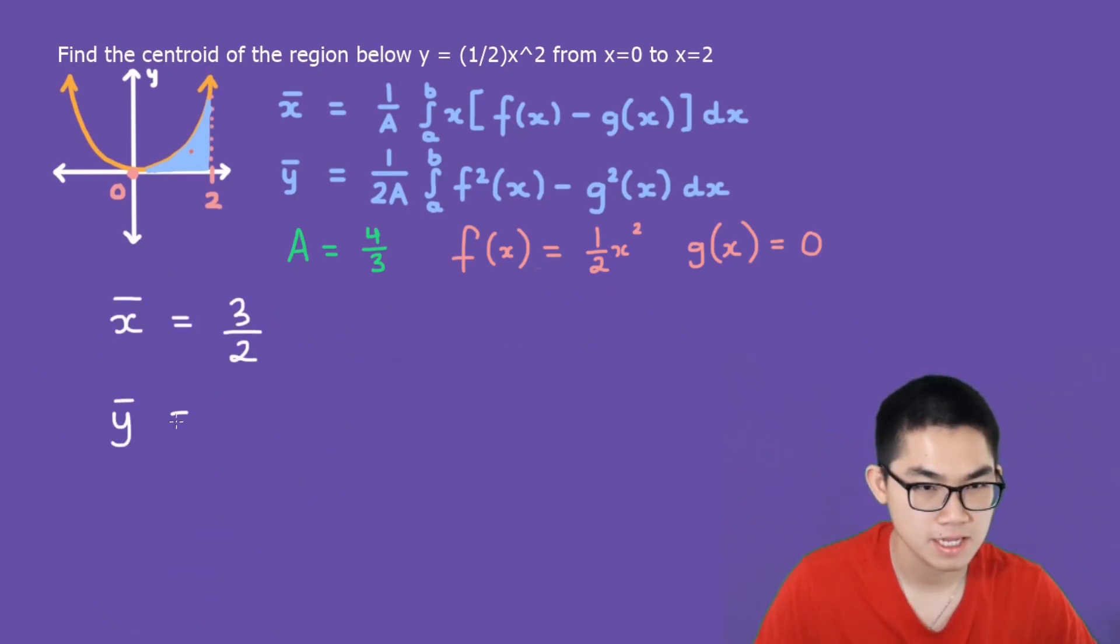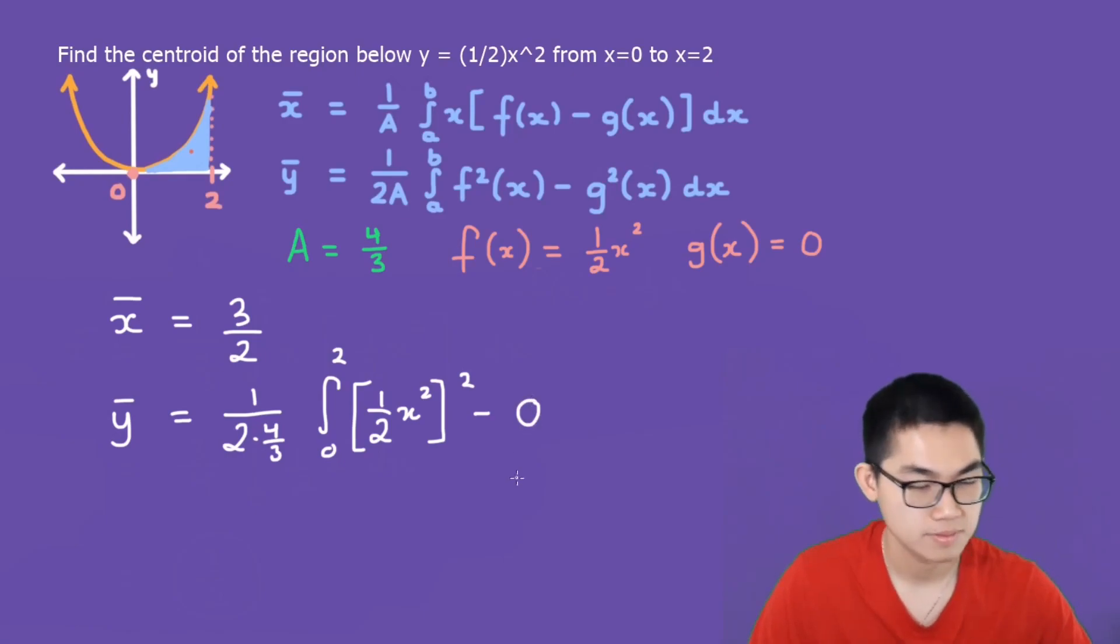y-bar is equal to 1 over 2 times 4/3 times the integral from 0 to 2 of f(x) squared. So that's going to be 1/2 times x squared. And this entire thing to the power of 2 minus g(x) to the power of 2. And g(x) is 0, so 0 to the power of 2 is 0. This is equal to 3/8 times the integral from 0 to 2 of 1/4 x to the power of 4 dx, which is just 3/5.